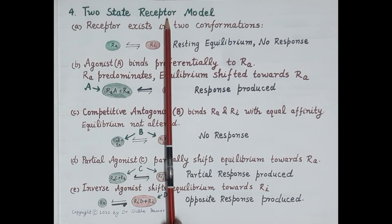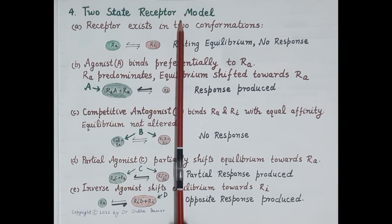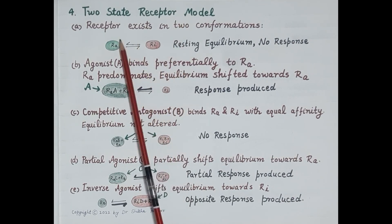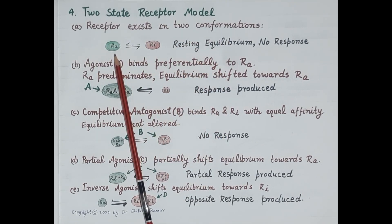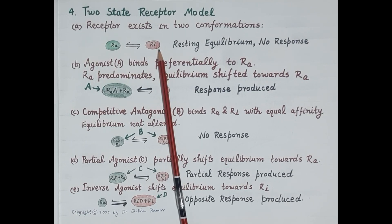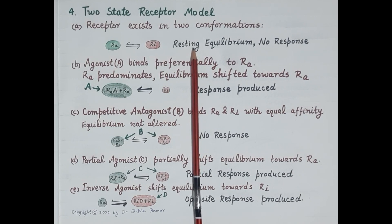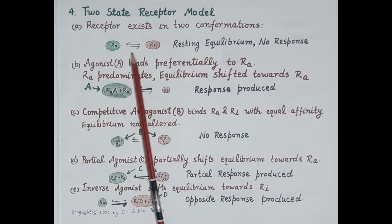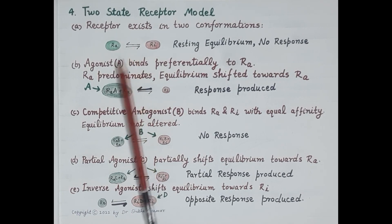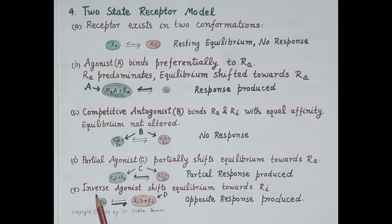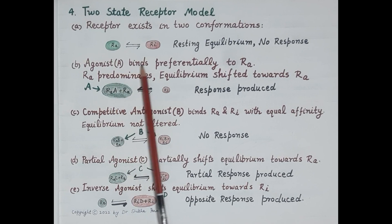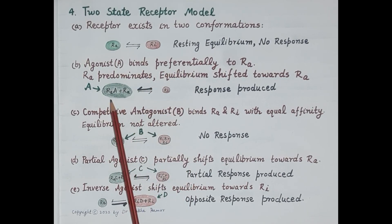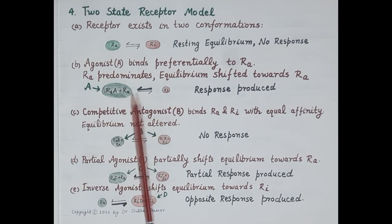The next receptor theory is the two-state receptor model. This model states that the receptor exists in two conformations: RA is the active state or active conformation of the receptor, while RI is the inactive state or inactive conformation. In the resting state, these two states exist in equilibrium and no response is produced. This model proposes the action of agonists, antagonists, partial agonists, and inverse agonists.